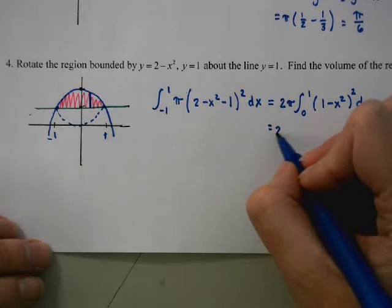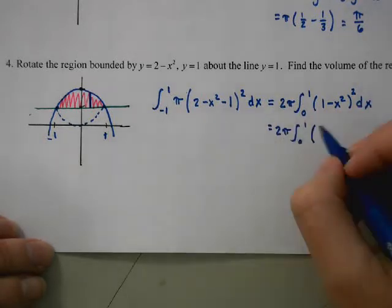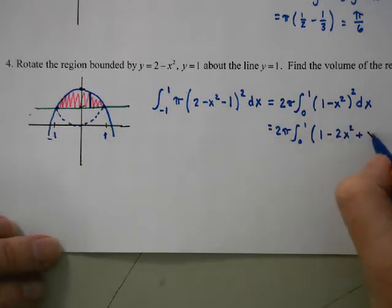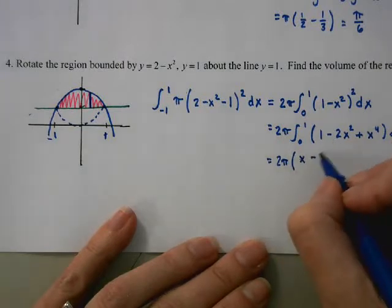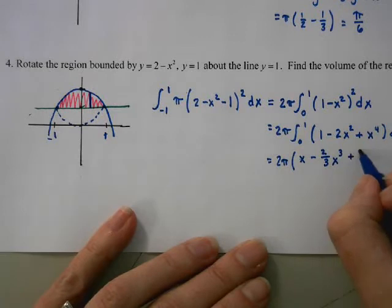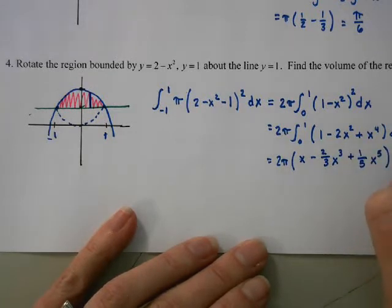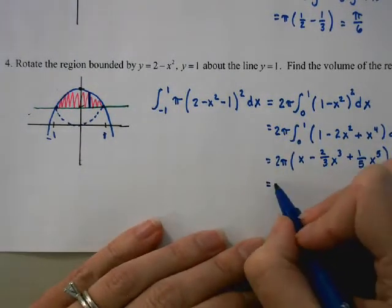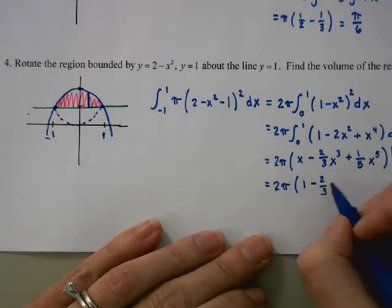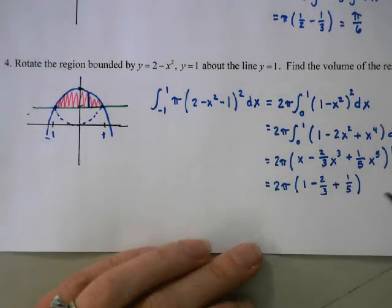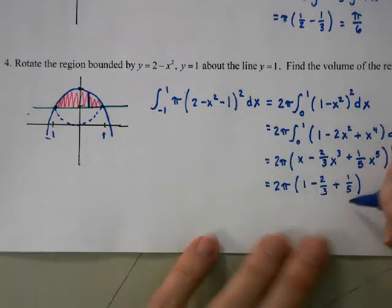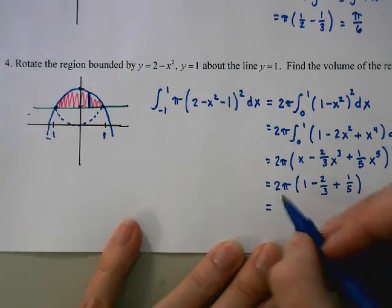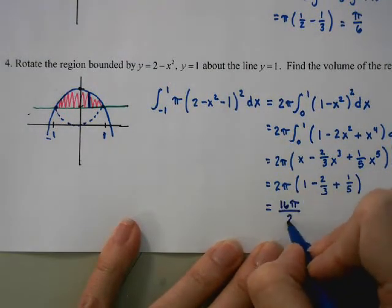We foil out (1 − x²)²: that gives 1 − 2x² + x⁴. Integrating with the power rule: 2π times x minus two-thirds x³ plus one-fifth x⁵, evaluated from 0 to 1. Plugging in 1: 1 minus two-thirds plus one-fifth. Getting a common denominator of 15: 15/15 minus 10/15 plus 3/15 equals 8/15. So the volume is 2π times 8/15, giving 16π/15.